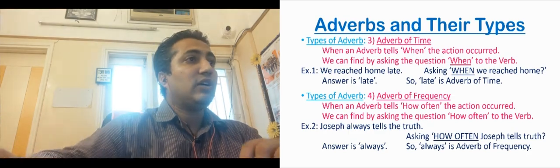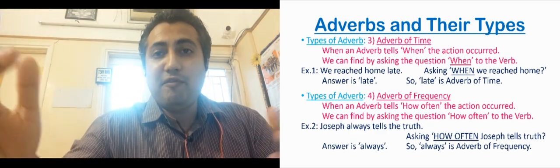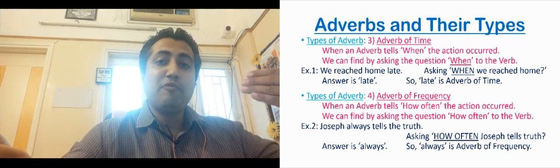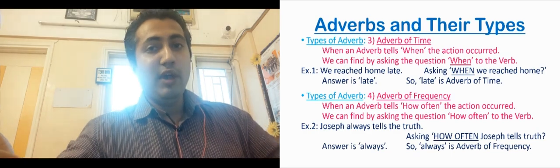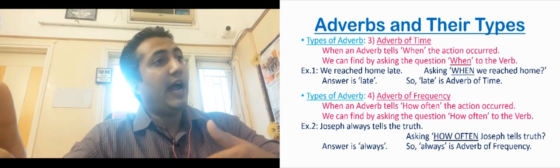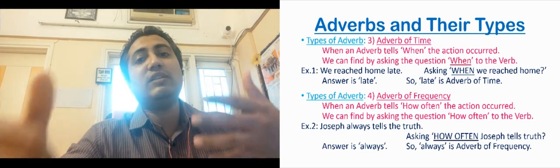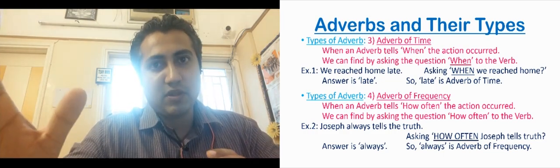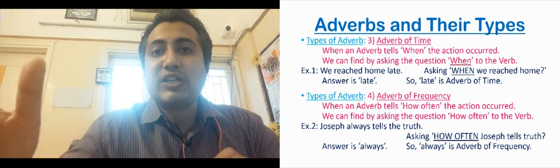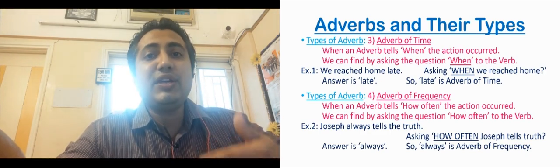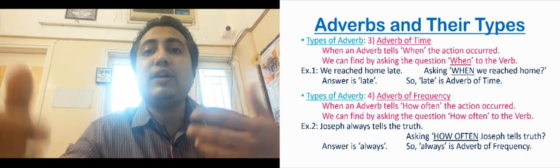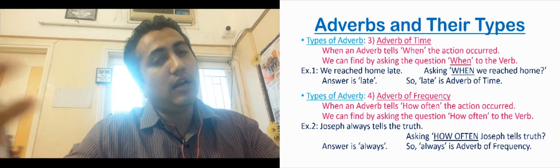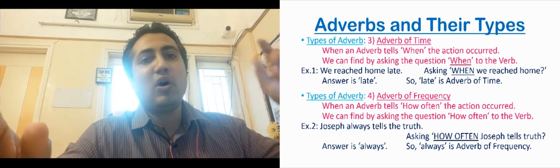The third type is adverb of time, which tells when the action was done. For adverb of time, we ask the question when. Example: We reached home late. What is the action? Reached. We reached home — when? Late. So that is the adverb of time. It tells us the time. When was the action of reaching done? Late. So it is adverb of time.